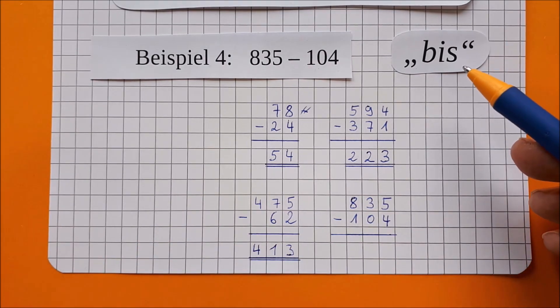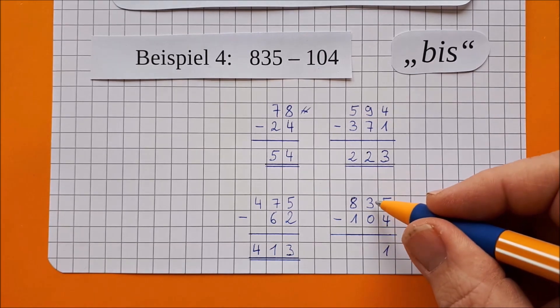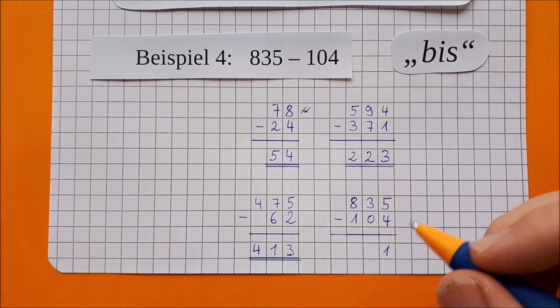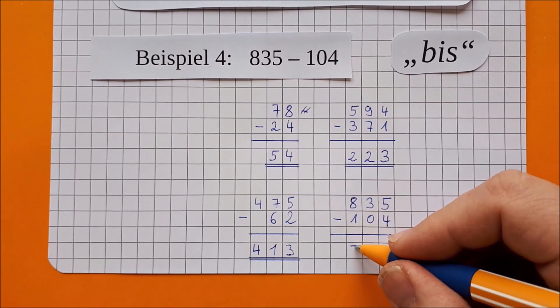Und dann heißt das Zauberwort immer noch bis. 4 bis 5 ist 1. 0 bis 3. Und ihr merkt hier, die 0 ist überhaupt gar kein Problem. 0 bis 3 sind 3. Und von 1 bis 8 sind es 7.